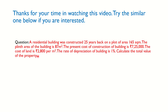You can try this practice problem: A residential building was constructed 25 years back on a plot area of 165 square meters. The plinth area is 87 square meters. The present cost of construction is 7 lakh 25,000 rupees. The cost of land is 2800 rupees per square meter. The rate of depreciation is 1 percent. Calculate the total value of the property.